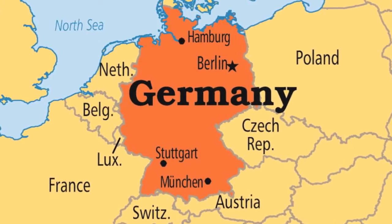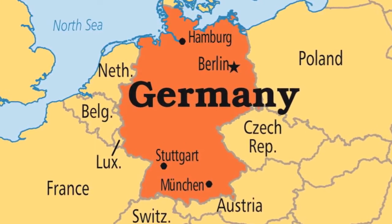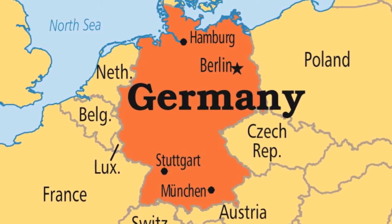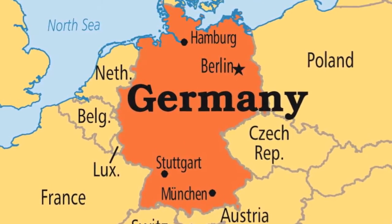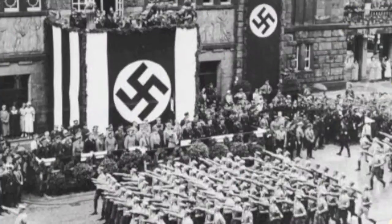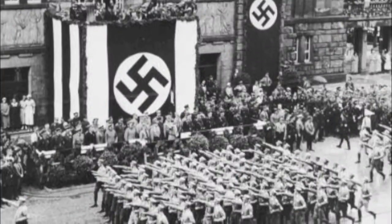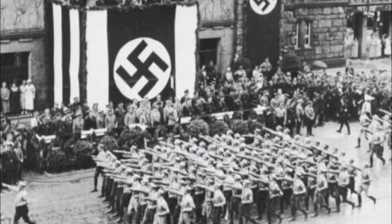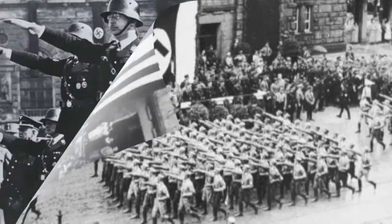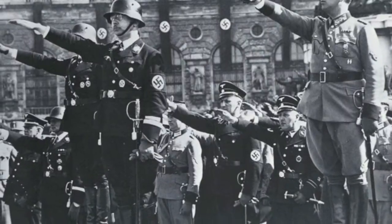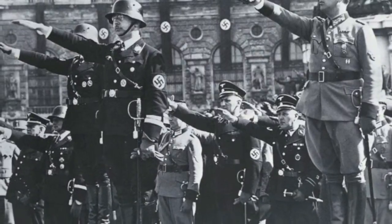Germany was in a deep economic depression in the 1930s and Hitler promised Germans a better life. Hitler believed that Germans were racially superior to everyone else and that racially inferior people, such as the Jews and Gypsies, should be eliminated from Germany.